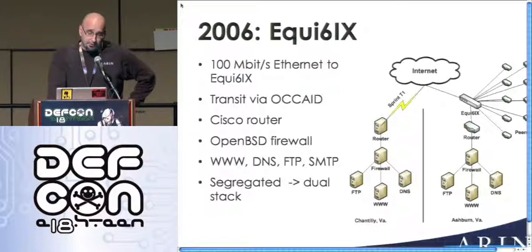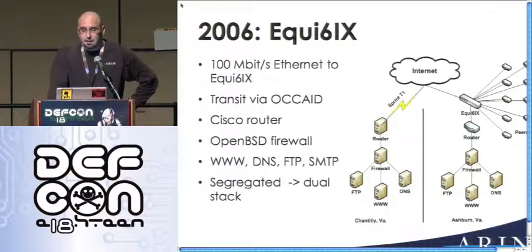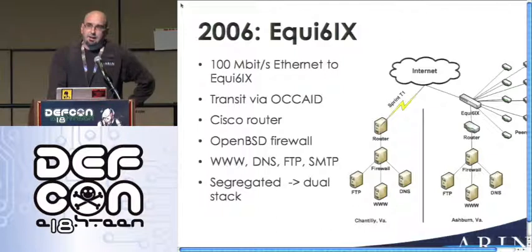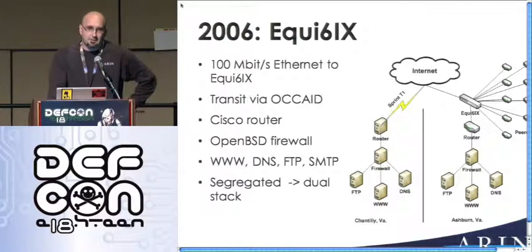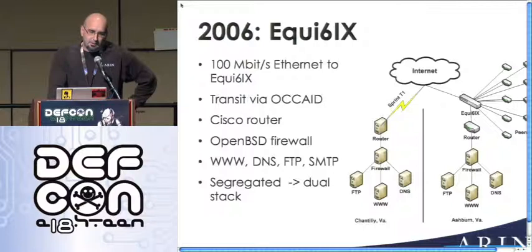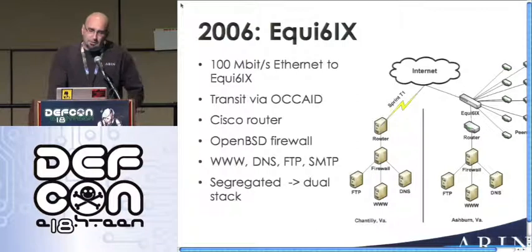We stuck with the same Cisco 2811 and OpenBSD firewall. The biggest difference now is that since we had good V6 connectivity for the first time, we added a quad-A record for www.arin.net. This proved to be a neat thing — it meant that people finally noticed they could no longer get to ARIN and started emailing us, which led to an opportunity to help people figure out why their V6 was broken.